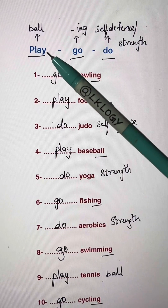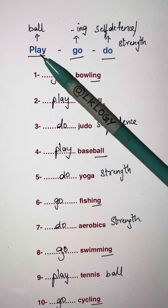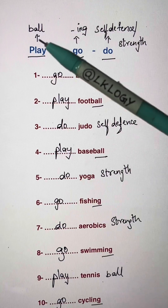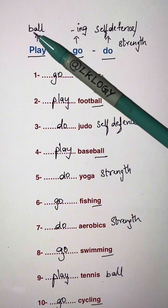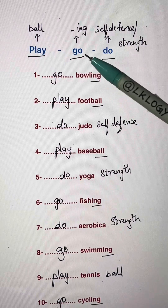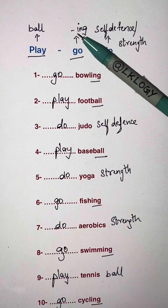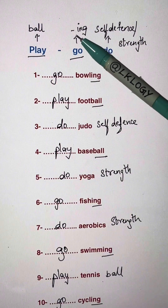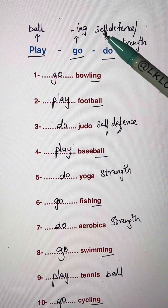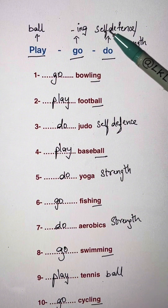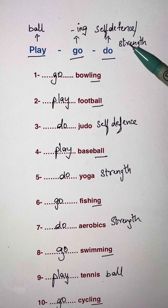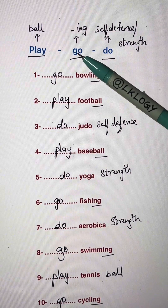In this video we're going to see where we use play, go, and do. Play is used when you have a ball sport — when there is a ball in the sport. Go is used in a sport which is followed by -ing. Do is followed by a sport which is a self-defense or strength sport.